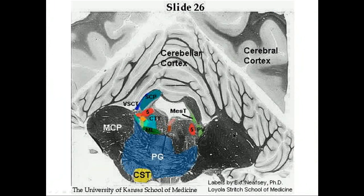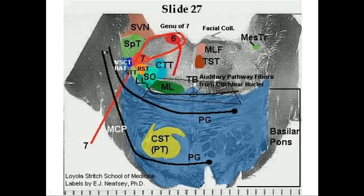Here's a different view showing the cerebellar cortex, pons, and middle cerebellar peduncle, still near the trigeminal nerve complex. Now at the level of facial cranial nerve 7, you can see the genu. The corticospinal tract is still plowing through the pons.